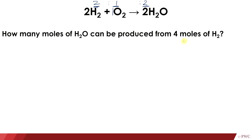The condition in the first problem is: what if we have 4 moles of H₂? How many moles of H₂O can be produced? Based on the ratio, H₂O and H₂ have the same number, so we can guess that if we have 4 moles of H₂, then we can have 4 moles of H₂O. But just to be organized, let's try to solve this one step by step.